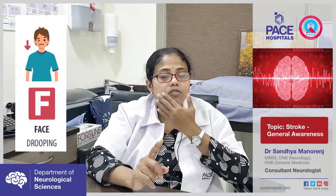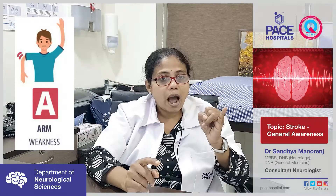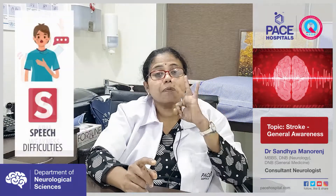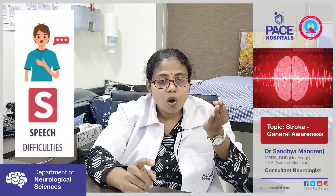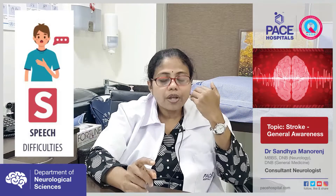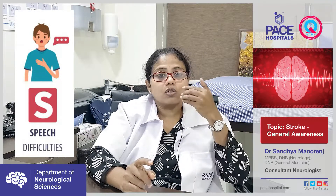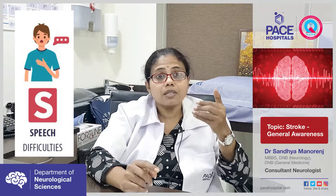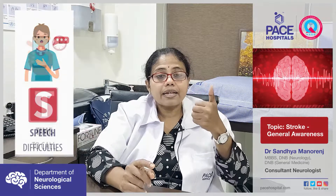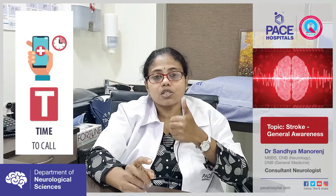To recognize stroke, remember the word FAST. F is for face — weakness of one half of the face. A is for arm weakness. S is for speech abnormality — not talking fluently, not getting words, or slurring of speech. T is for time — time to call the ambulance and reach the hospital. This was the original logo given by the World Health Organization to recognize stroke.